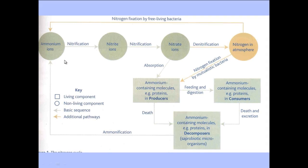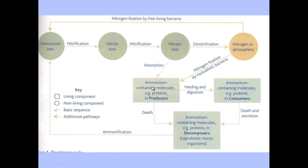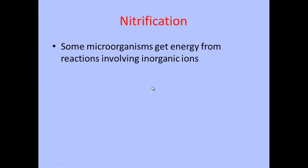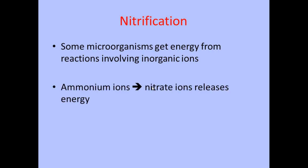Looking at the diagram, you can see that nitrification is occurring between these two points. Nitrification is the conversion of ammonium ions eventually into nitrate ions. Like all processes in the nitrogen cycle, these are carried out by bacteria, which convert ammonium ions into nitrate ions. This is an oxidation reaction.